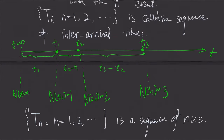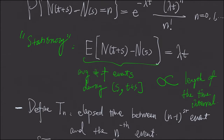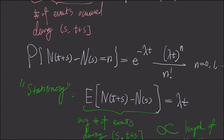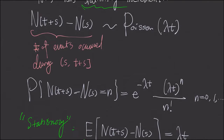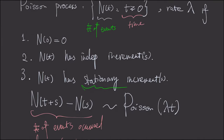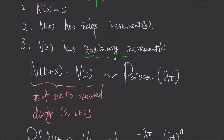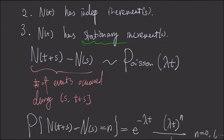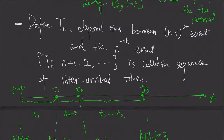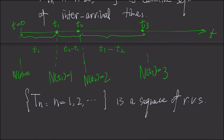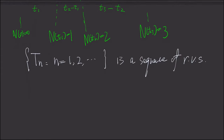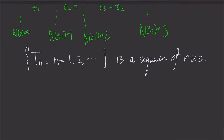It turns out that for a Poisson process satisfying properties 1, 2, and 3, the interarrival times form a sequence that follows an exponential distribution.